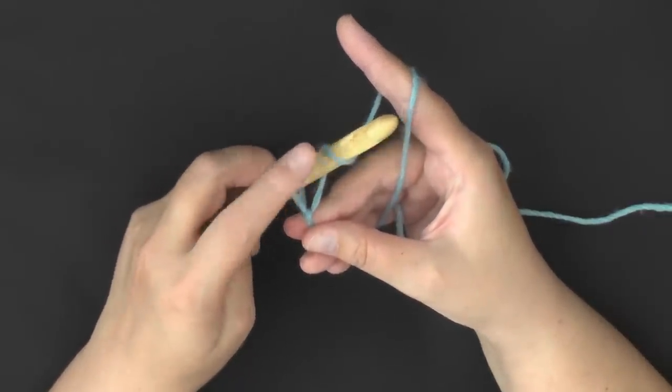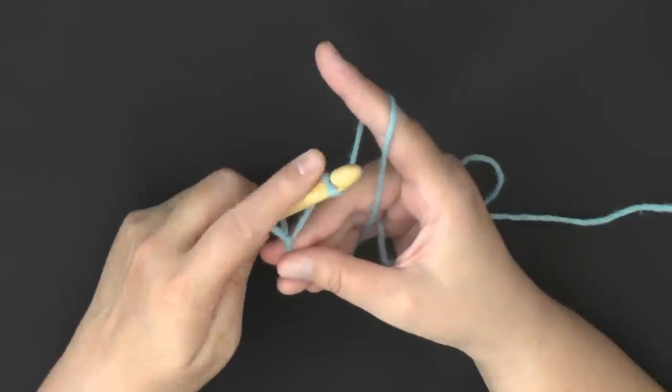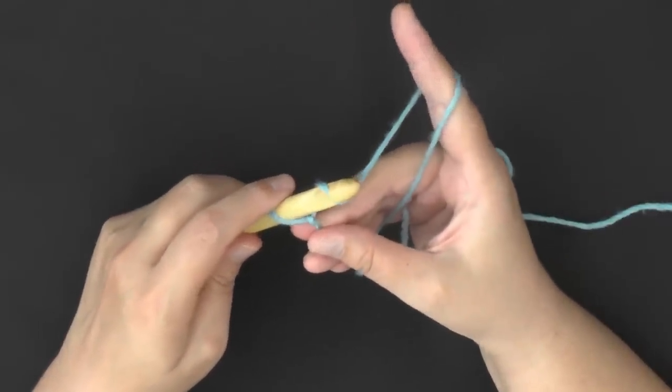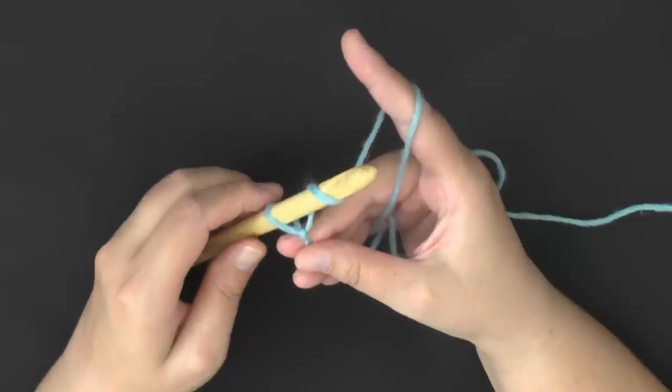Now that you have this yarn on your hook, your hook can actually grab it. See, now you have control of some yarn on your hook.